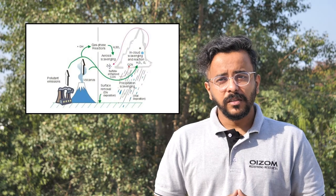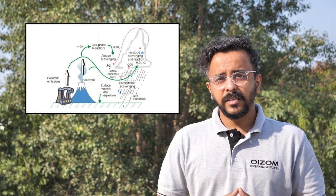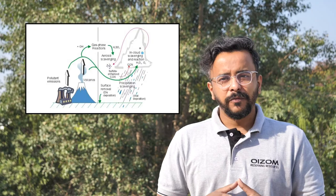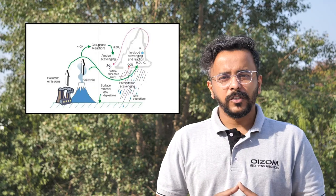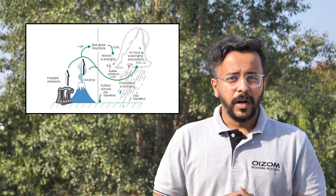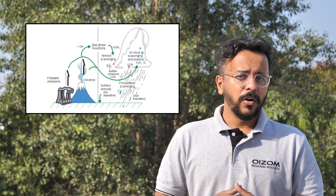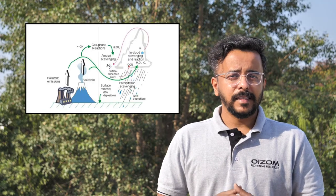SO2 deposition damages the foliage of trees and plants, turns their leaves yellow, and limits plant growth. SO2 emission results in the formation of acid rain that damages plant tissues, acidifies the water, and affects the fertility and quality of the soil. The sulfate-containing particles in the atmosphere can contribute to the formation of smog and thick haze that reduces visibility, in addition to impacting health.